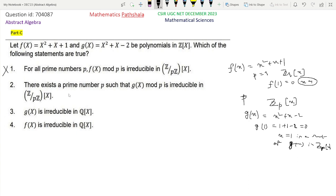So option 2, that there exists a prime number p such that g(x) mod p is irreducible in Zp[x], is not true. Because for all prime numbers p, g(x) mod p is not irreducible in Zp[x]. So option 2 is not the correct option.